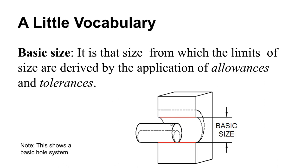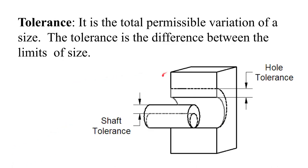The basic size is sort of the bounding zone between the shaft and the hole. In this system, the hole can go all the way down and approach the basic size and be in tolerance. The shaft will never get as large as the basic size because there is a fundamental deviation — a guaranteed minimum clearance between the shaft and the hole. The tolerance is the zone the hole diameter has to fall within.